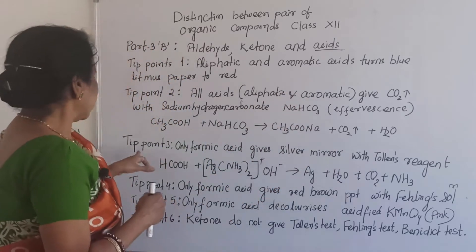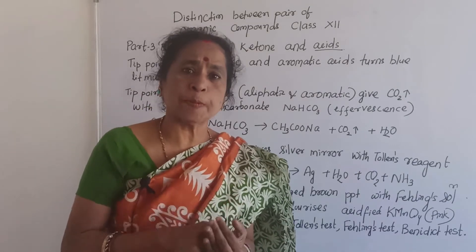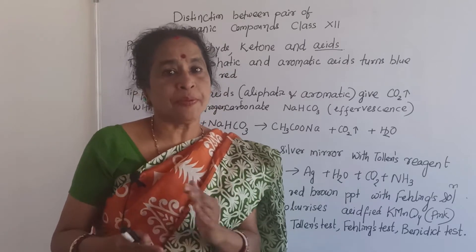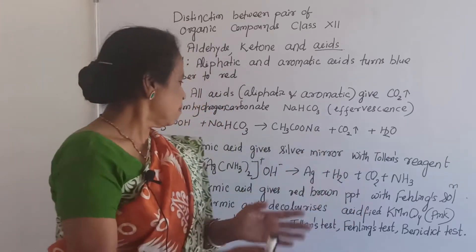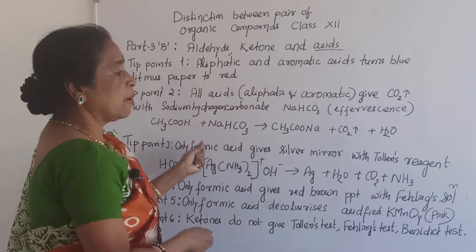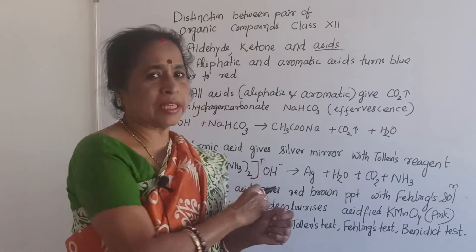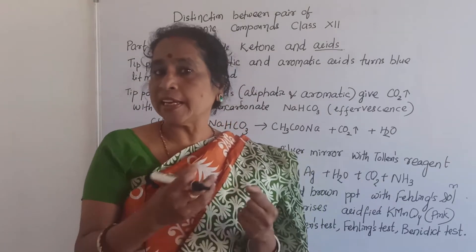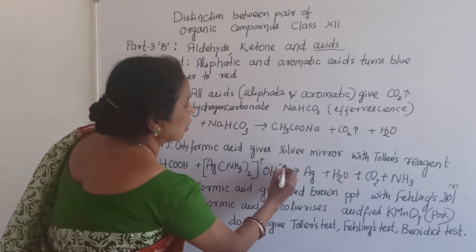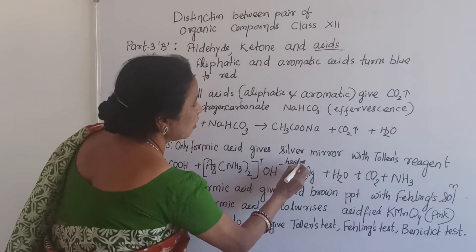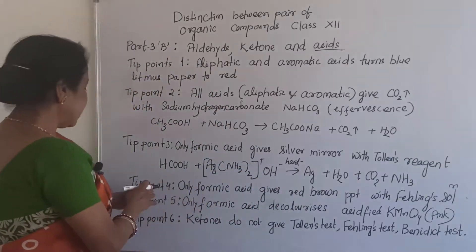Point 3: Only formic acid gives a silver mirror test. Formic acid has a nature to give different types of positive tests by which we can distinguish it from other compounds. With Tollens' reagent — you take formic acid in a test tube, add Tollens' reagent, and heat it — immediately a silver mirror appears on the inner side of the test tube.